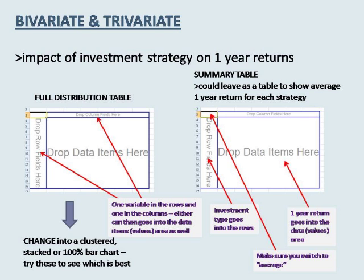For the impact of investment type on one year returns, the first thing to think about is what kind of variables we have. One year return is numerical and investment type is categorical. For this mixed bivariate combination we can use both the rows and the columns of the pivot table, making sure that the numerical variable is in groups. This can then be turned into either a clustered, stacked, or 100% stacked bar chart. You can try these options to see which best shows the relationship, if any, between these variables and specifically whether investment type has an impact on the one year return.